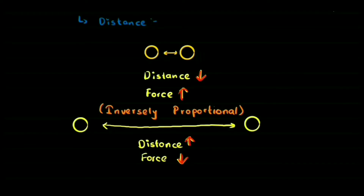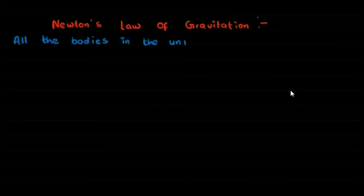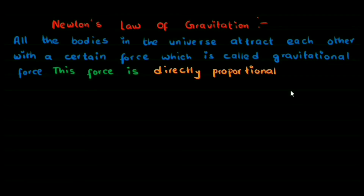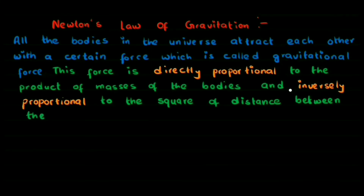And that's all Newton's law of gravitation is about. Now we are going to try to write the same thing in sentences. Newton's law of gravitation — first of all we start from the definition of gravitational force: all the bodies in the universe attract each other. And this gravitational force is directly proportional to the product of the masses, and it is inversely proportional to the square of distance between them. So mathematically it's the square of distance, not just distance.